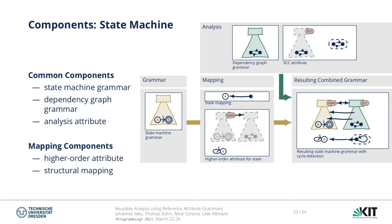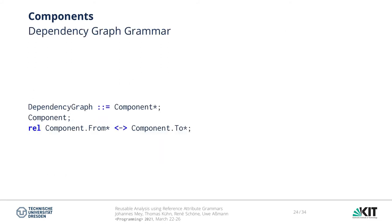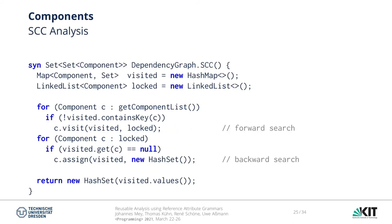Let us look at the components in detail. We have already seen the state machine grammar, so we will continue first with the reusable analysis and then with the mappings. The problem-specific grammar is extremely simple — it is just a list of components connected with bidirectional relations; no other information is required here. Using this data structure, the analysis can be described. Not surprisingly, this looks very similar to the one shown earlier, with the difference that in this version there is no use of the state machine grammar, which also makes navigation slightly easier.